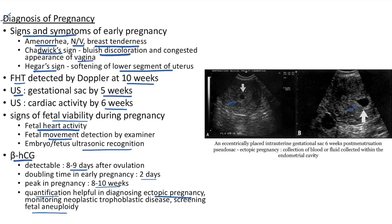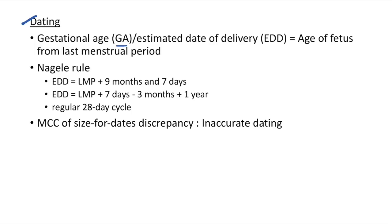Now let us see about dating of pregnancy. Gestational age (GA) or estimated date of delivery (EDD) is the age of the fetus from the last menstrual period (LMP). Naegele's rule: EDD = LMP + 9 months and 7 days, or equivalently LMP + 7 days − 3 months + 1 year. This is applicable only when there are regular 28-day cycles. The most common cause for size-for-dates discrepancy is inaccurate dating.